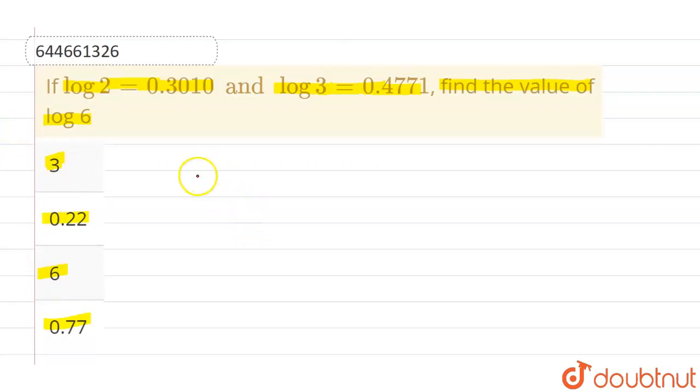Now since we have to find out the value of log 6, we know that log 6 can be written as log of 2 into 3. And we know a property of log that log of a into b can be written as log a plus log b. This is the property of log.